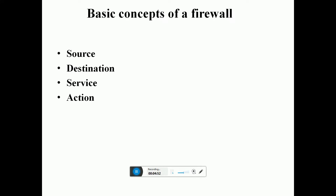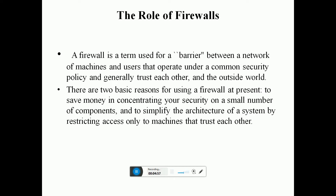The basic concept of firewall involves four elements: source, destination, service, and action. The role of a firewall is to act as a barrier between networking missions and users operating under a common security policy who generally trust each other, and the outside world. There are two basic reasons for using a firewall: to save money by concentrating security in a small number of components, and to simplify the architecture system while restricting access.